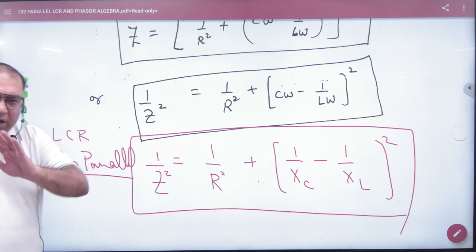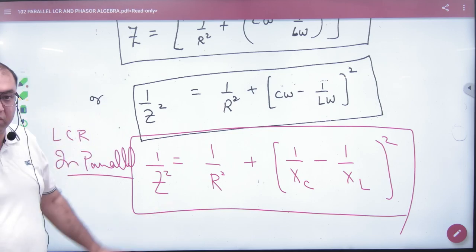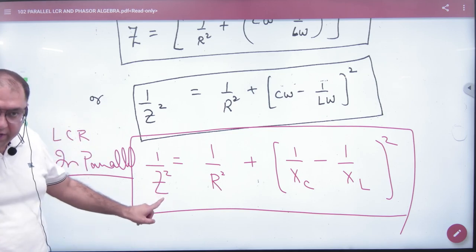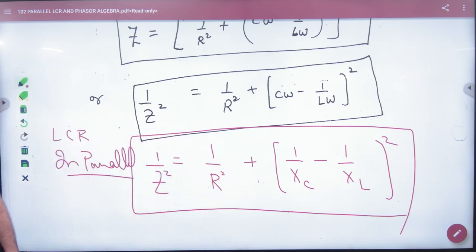Series has a different impedance formula and parallel has a different impedance formula - this is the first one. This is Z². If you need Z, take the square root. It is not in NCERT. The formula will only work in objective questions.